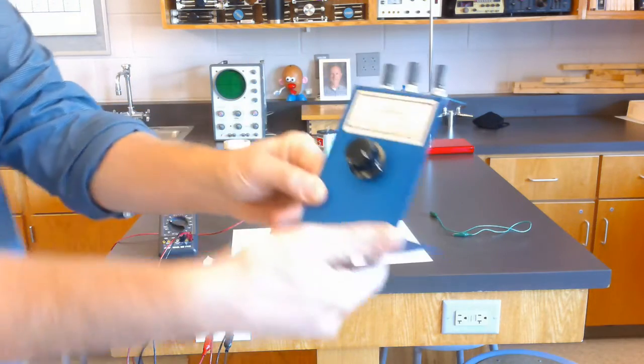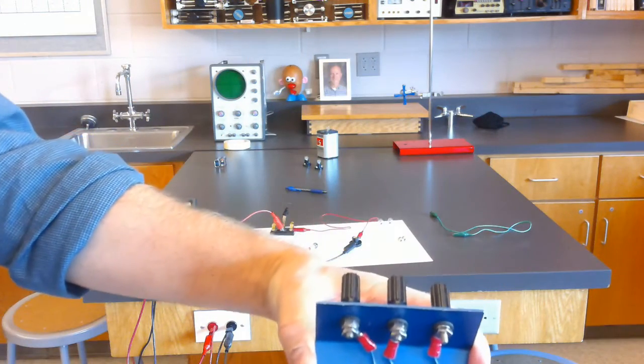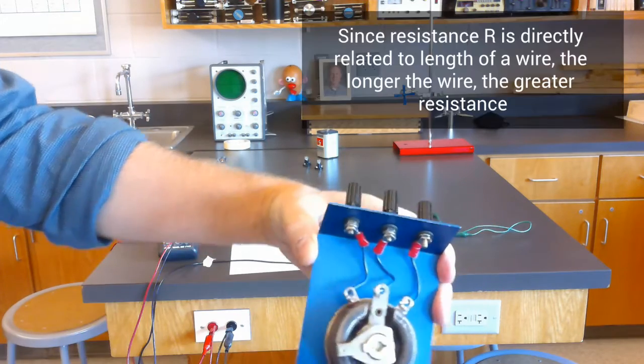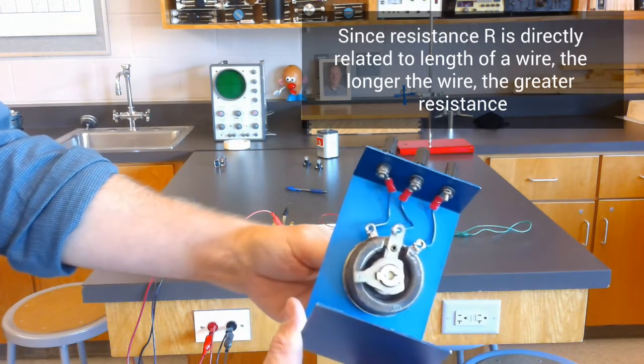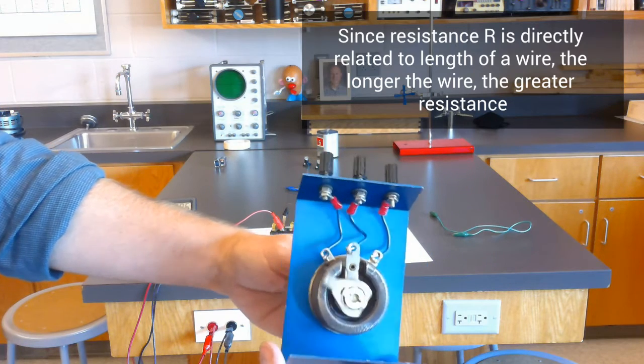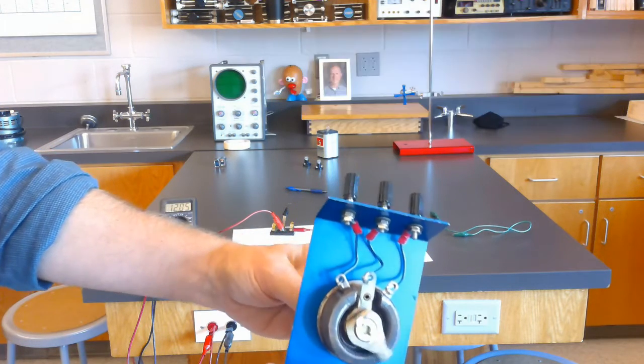Now, essentially what it is is just a giant coil of wire. Check it out. And since wire resists the flow of electricity, the more the electricity flows through more of the coil, the greater the resistance is. So I just turn the knob to adjust what my resistance would be.